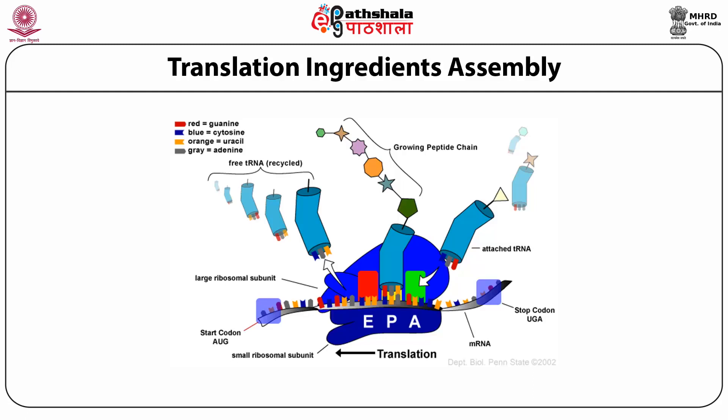Each amino acid has a specific codon. The genetic code consists of triplet, continuous, non-overlapping and universal codons. This code is redundant or degenerate because a single amino acid can have more than one codon. The start and stop codons are the same for all organisms. AUG is the initiation or start codon. The three stop codons are UGA, UAG and UAA.